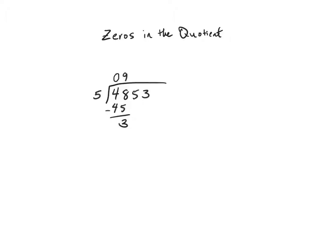My 3 leftovers is not enough to make another group of 5, so I'm going to have to regroup. Now I ask myself how many groups of 5 can I make from 35, which is 7. 7 times 5 is 35, and I have no leftovers, so again I'm going to regroup.